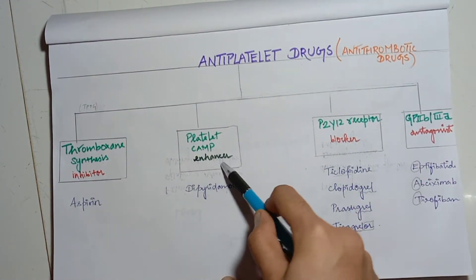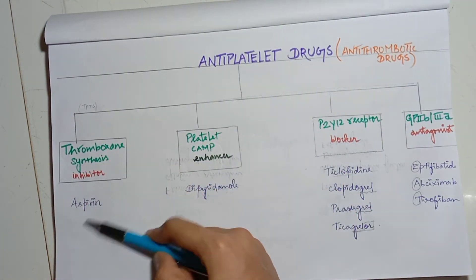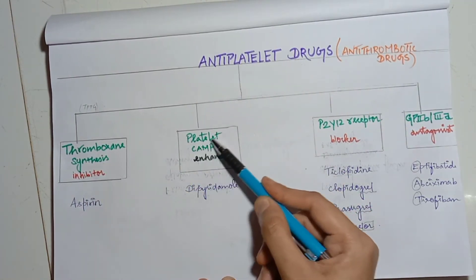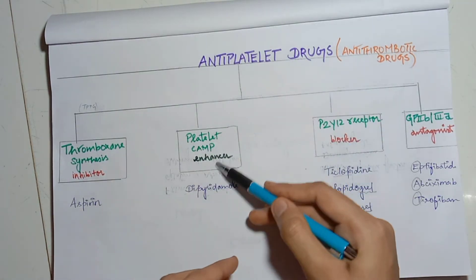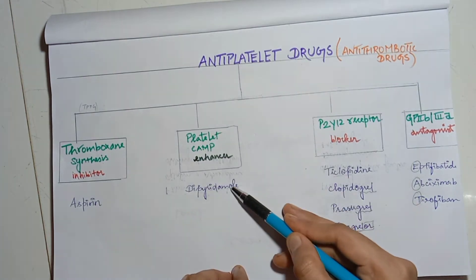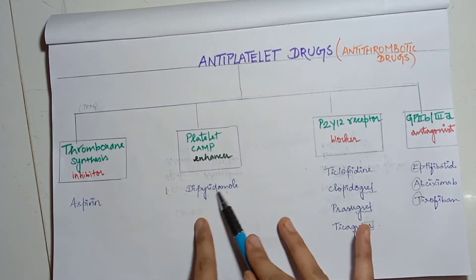This platelet camp enhancer type includes aspirin in thromboxane synthesis. And platelet camp enhancer includes dipyridamol, which is very easy to remember.